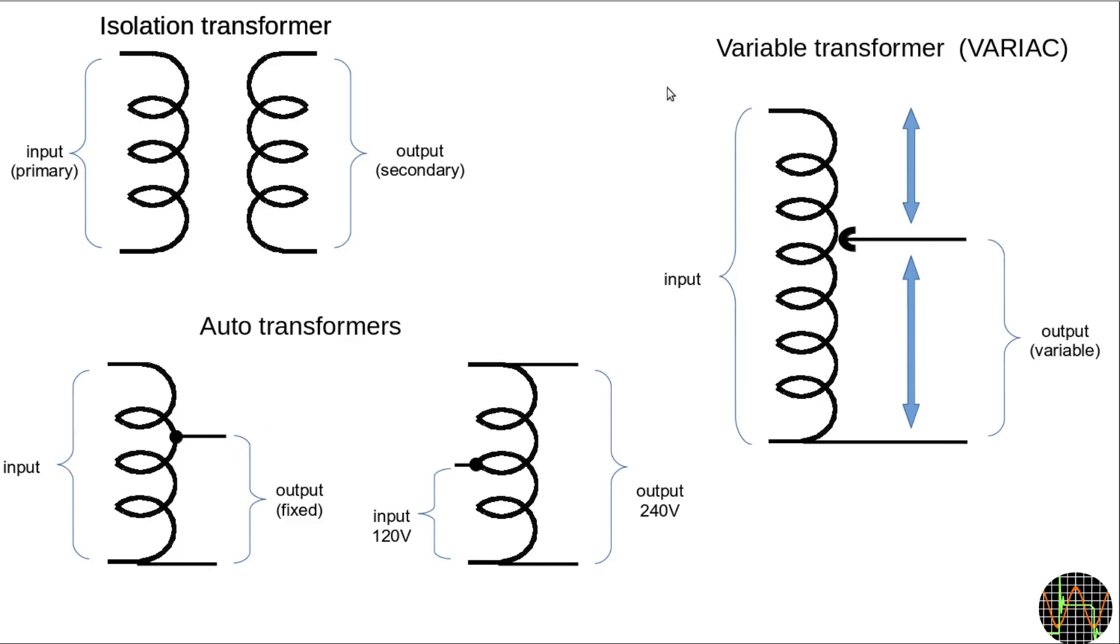The variable transformer solves that by providing an unlimited number of taps and therefore freely selectable AC output voltage, hence VARIAC. It is a special kind of autotransformer using a slider arrangement that connects the output to any position of the coil, a bit like a potentiometer for resistance.